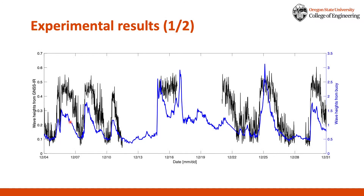Overall, the wave height from GNSS IR shows a similar pattern to the wave height from the buoy. It was confirmed that as the wave height from the buoy increased, the GNSS IR result also increased. And conversely, when the wave height from the buoy decreased, the GNSS IR result also decreased.